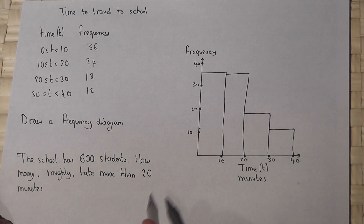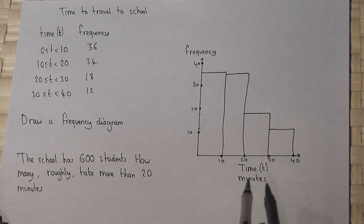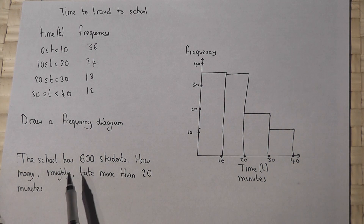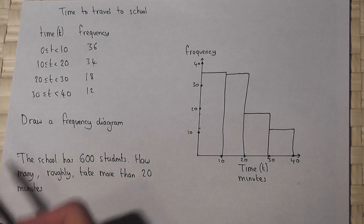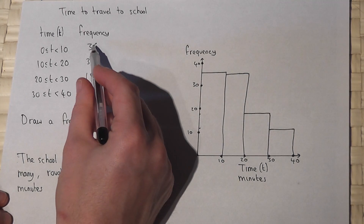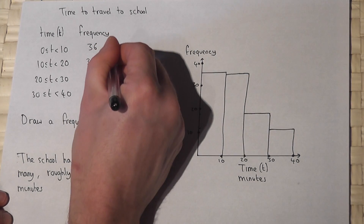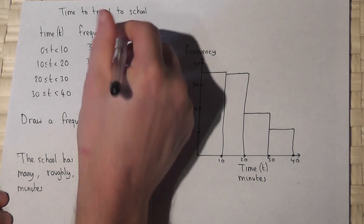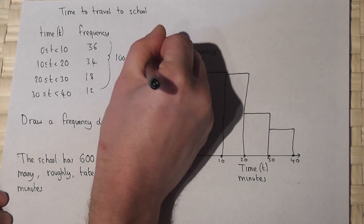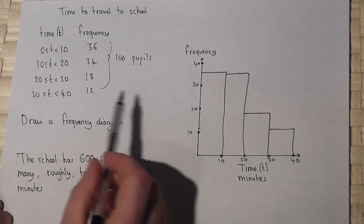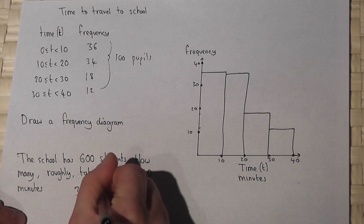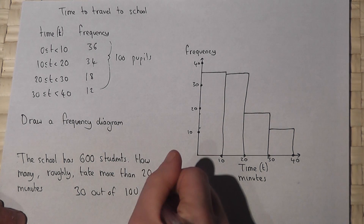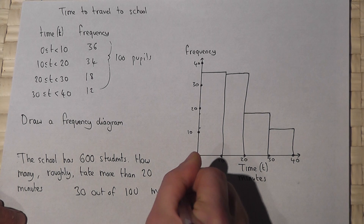It's a bar graph. In part two we're asked to estimate how many people in the school take more than 20 minutes to travel to school. This table has 100 pupils in total, and from this sample, 18 plus 12 — which is 30 — so 30 out of 100 pupils take more than 20 minutes.